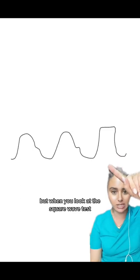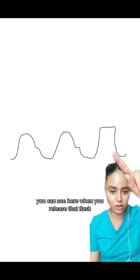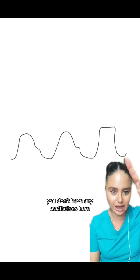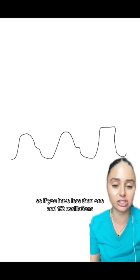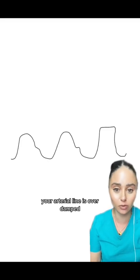When you look at the square wave test, you can see here when you release that flush, you don't have any oscillations. So if you have less than one and a half oscillations, your arterial line is over damped.